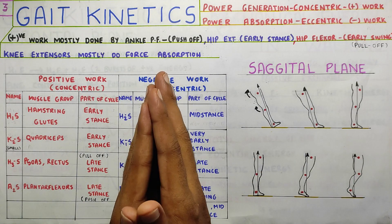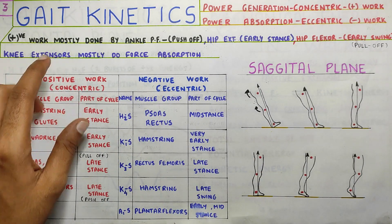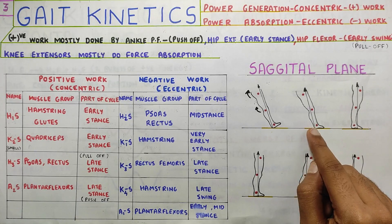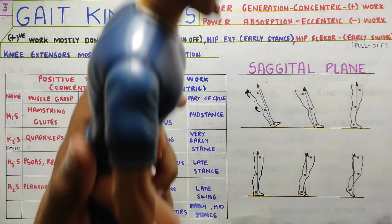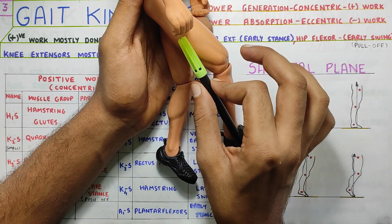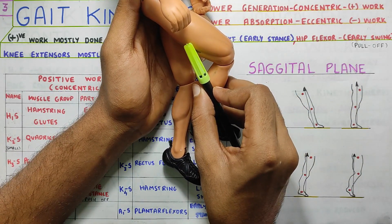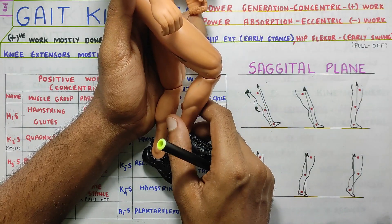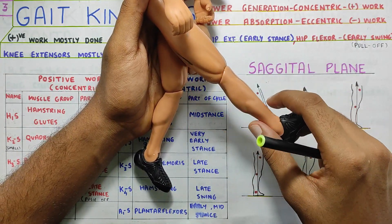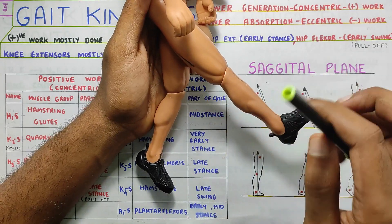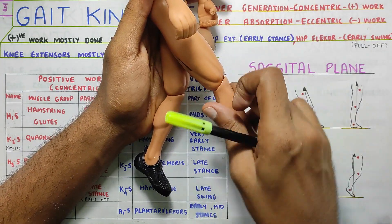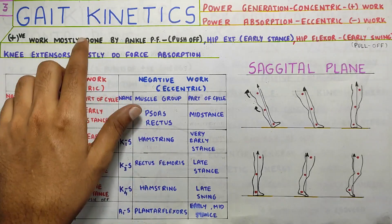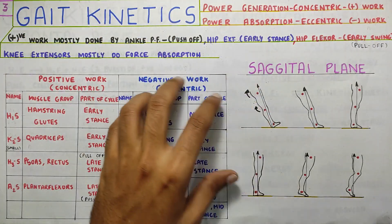When it comes to force absorption, the knee extensors work and they do the force absorption. The line of gravity passes behind the knee, which will tend to cause knee flexion. This knee flexion is controlled by eccentric activity of the quadriceps, because the quadriceps does extension concentrically and eccentrically controls flexion. So the quadriceps will control that flexion — that is the force absorption or power absorption seen at the knee joint.